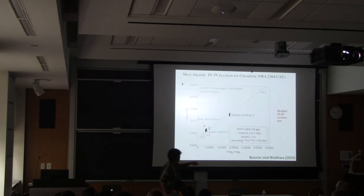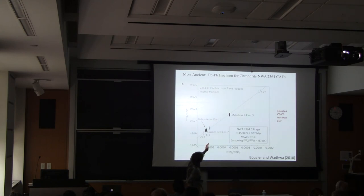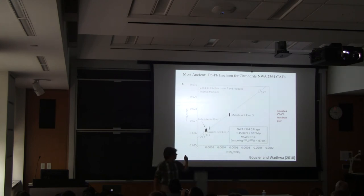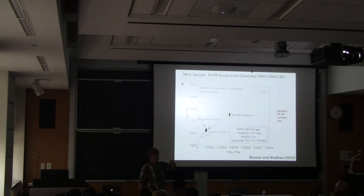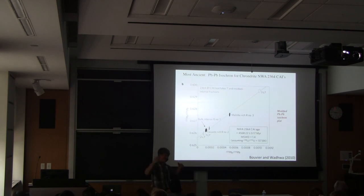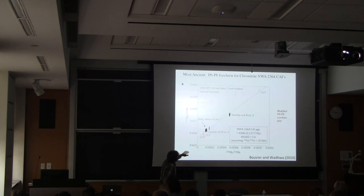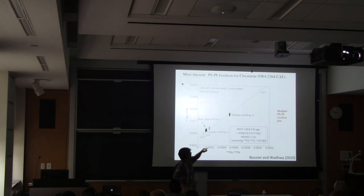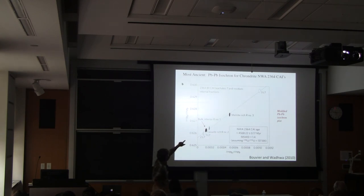This is a similar diagram — a modified isochron diagram where they flipped a bunch of the ratios and changed exactly what's being plotted. This is the plot from the paper that dated the calcium-aluminum inclusions in chondrites. It's a diagram of lead isotope ratios, and the idea is that if you plot multiple samples from the same material with different uranium-lead ratios, you can get an age based on the slope.